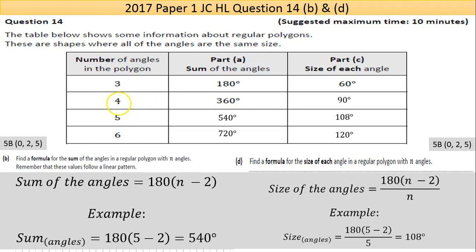Let's see if that works for all of them. 180 multiplied by 4 minus 2, so 180 times 2, which is 360. 180 multiplied by 5 minus 2, which is 3, 180 times 3 is 540. The last one, 180 times 6 minus 2, which is 180 multiplied by 4, giving you 720. So it's working.